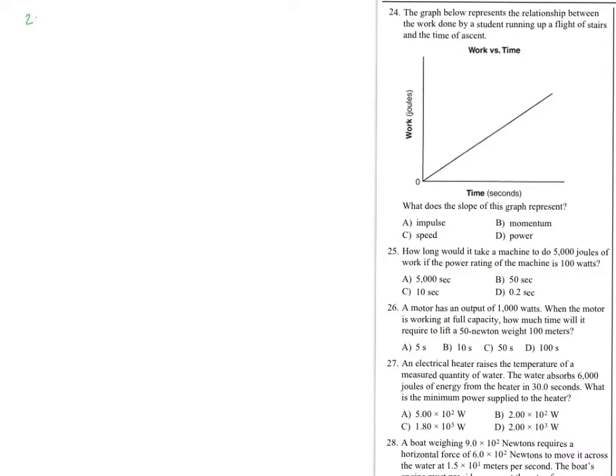Alright, so let's look at number 24 on the next page. We have a work versus time graph. I know I haven't exposed anyone to this kind of graph. And it's asking for what does the slope of this graph represent. So what is slope exactly? Change in y over change in x. What is our y? It's work. What's our x axis? Time. So work over time, what does it give you? Power. Okay, that's choice D. Simple.